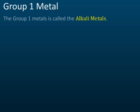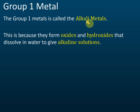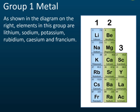Group one metals are also called alkali metals. They are called alkali metals because the oxides and hydroxides of group one metals dissolve in water and give alkaline solutions. Therefore, group one metals are alkali formers — they form alkali.